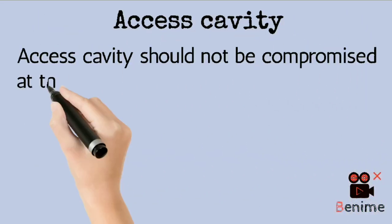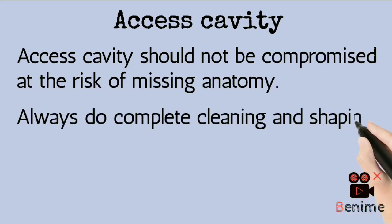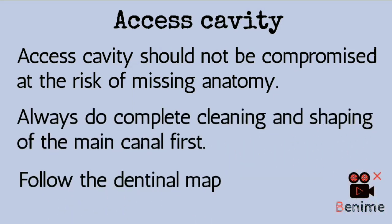First is access cavity. Access cavity should not be compromised at the risk of missing anatomy, which means your access cavity should not be incomplete. Minimally prepared access cavity designs present more risk than benefit on the outcome of endodontic treatment. If the roof of the pulp chamber is not removed, then canals can never be cleaned properly. The access cavity should be large enough to allow proper overviewing of all canals and possible atypical anatomy.